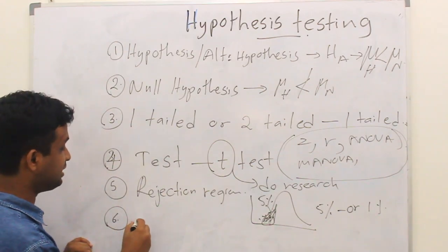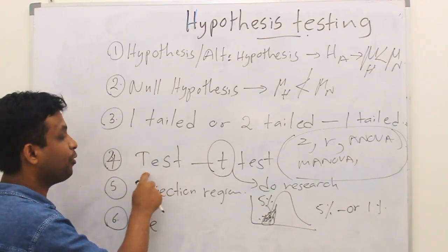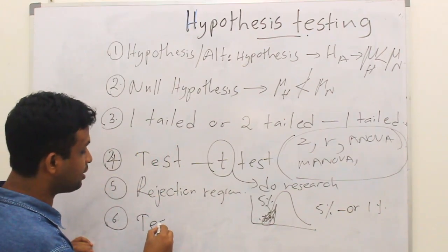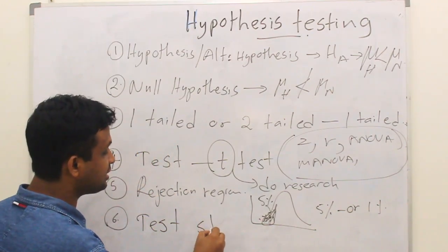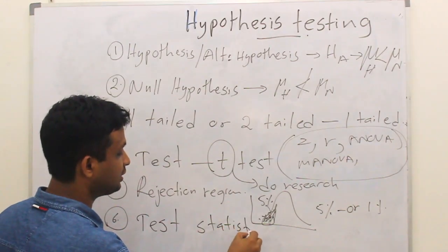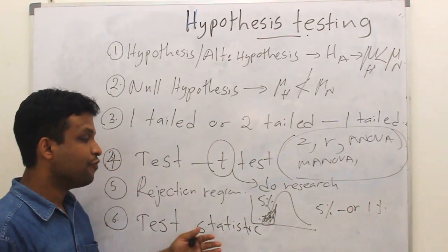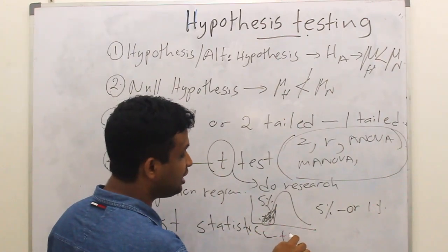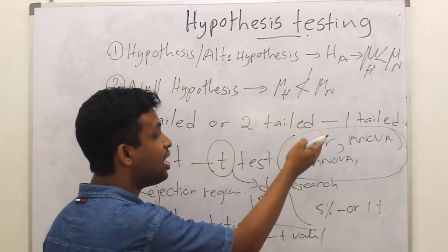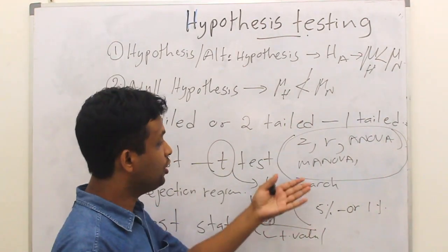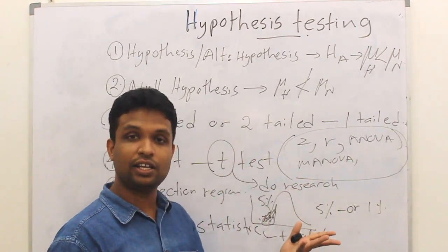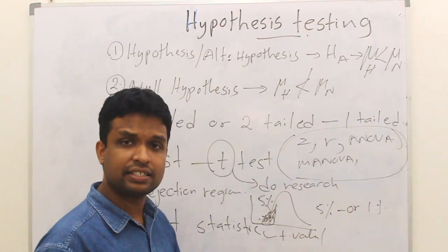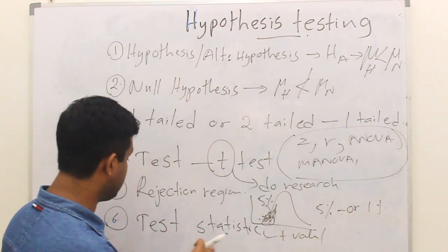Once you decide, you will get a value from this — we call that the test statistic. After performing the test and data analysis, you will get a test statistic. In a T-test, we will have a t-value. If it is an F-test, it will be an F-value. If it is a Z-test, it will be a z-value. There are several test statistics.